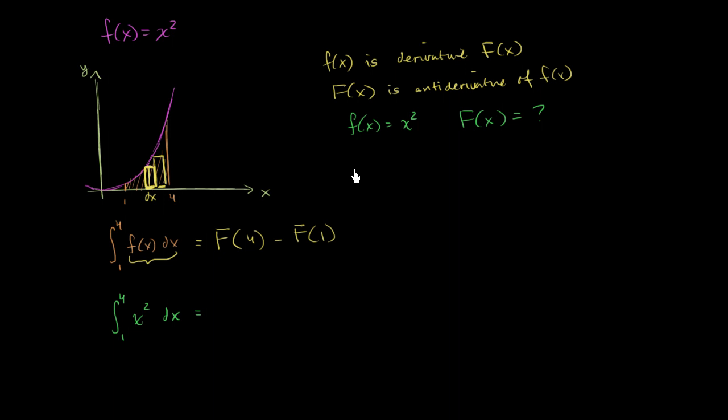Well, you might remember from your power rules that if you take the derivative with respect to x of x to the third, you are going to get 3x squared, which is pretty darn close to x squared, except for this factor of 3, so let's divide both sides by 3.